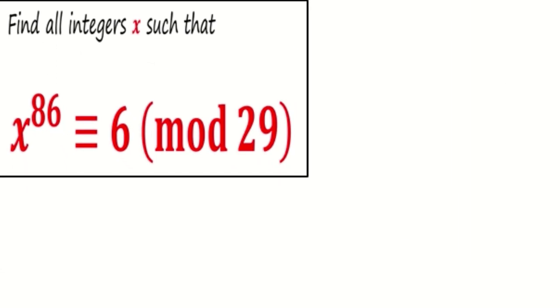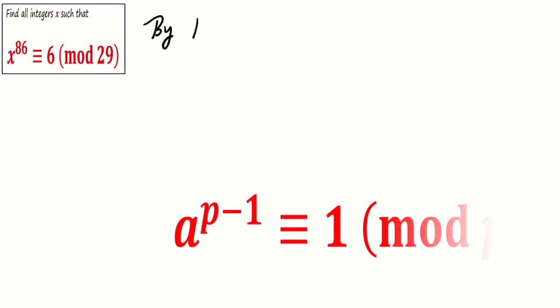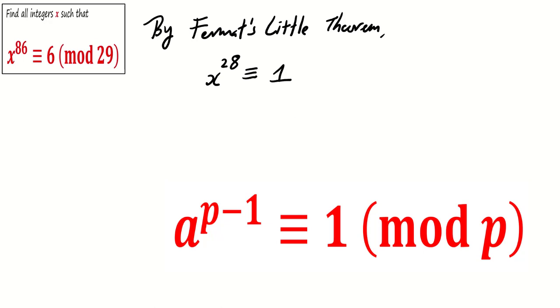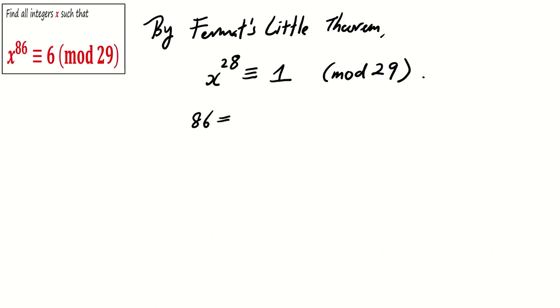Let's start our journey in solving this problem. By Fermat's Little Theorem, we know that x^28 ≡ 1 (mod 29) because 29 is a prime number. Note that 86 can be written as 3(28) + 2.